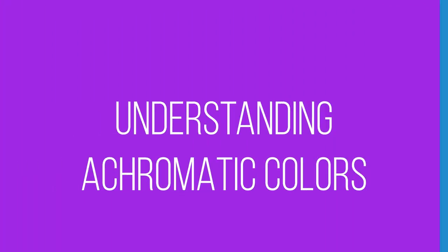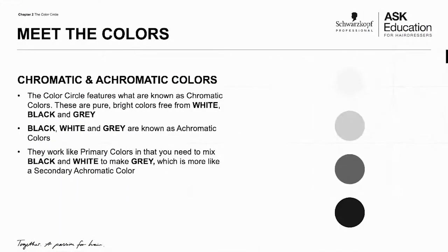So we talked about chromatic colors. Then you've got a section of colors called achromatic colors. These are black, white, and gray.